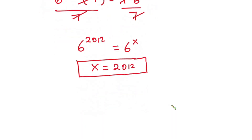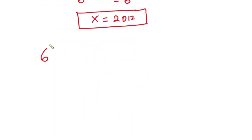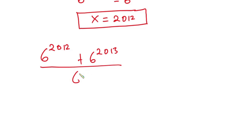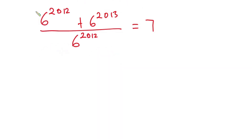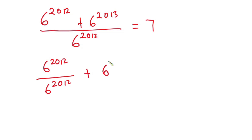Now let's verify our answer. We have 6 to the power 2012 plus 6 to the power 2013, divided by 6 to the power x where x is 2012, and this must equal 7. Let's split this fraction: we have 6 to the power 2012 divided by 6 to the power 2012, plus 6 to the power 2013 divided by 6 to the power 2012, and this must equal 7.